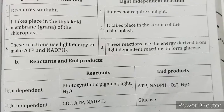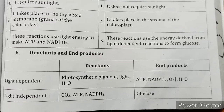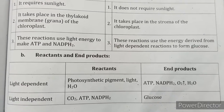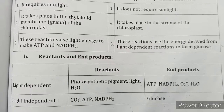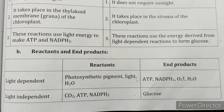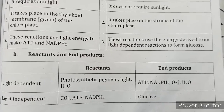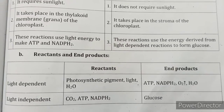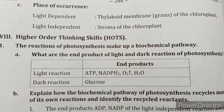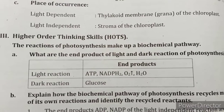Reactants and end products — Light-dependent reaction: reactants are photosynthetic pigment, light, and H2O; end products are ATP, NADPH2, and O2. Light-independent reaction: reactants are CO2, ATP, and NADPH2; end product is glucose. Place of occurrence — Light-dependent reaction: thylakoid membrane and grana of the chloroplast. Light-independent reaction: stroma of the chloroplast.